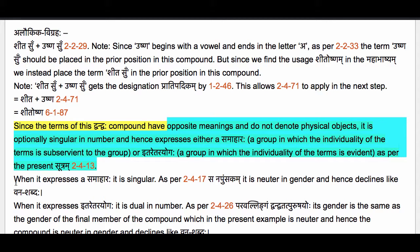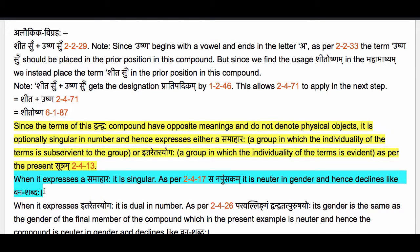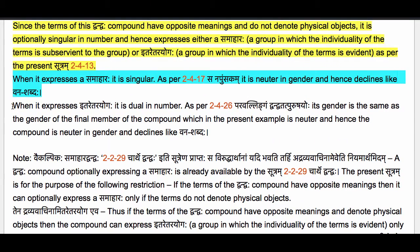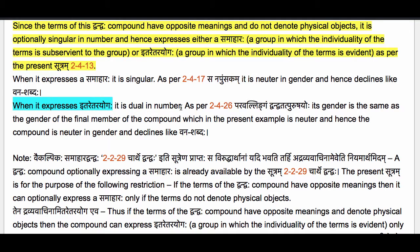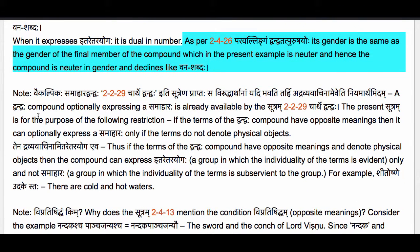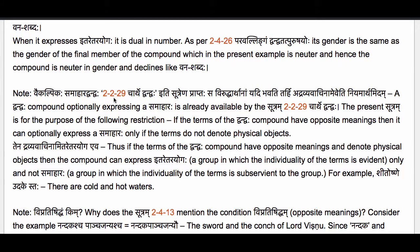When this compound expresses a Samaharaha it is singular in number. A Samahara is always singular, and as per Sutram 2.4.17 Sanpumsakam it is neuter in gender, declining like Vana Shabdaha but only in the singular. On the other hand, when this compound expresses Itare Tarayogaha it is dual in number because it has two members. As per Sutram 2.4.26 Paravalingan Dvandvatat Purusha Yoho, its gender is the same as the final member, which is neuter, so it declines like Vana Shabdaha.